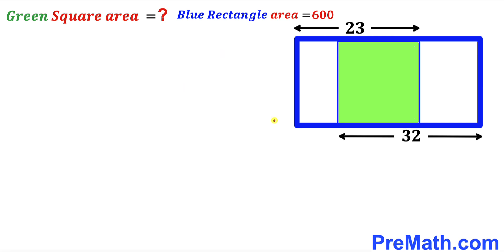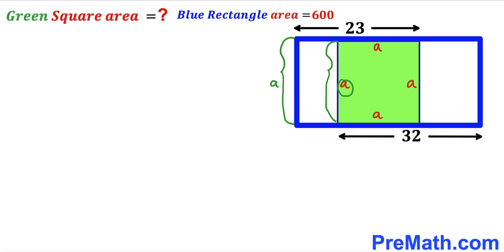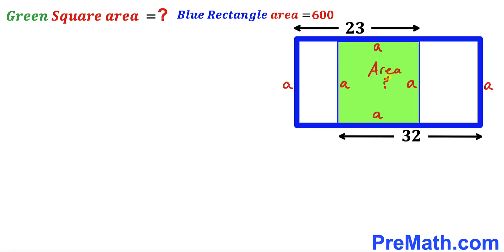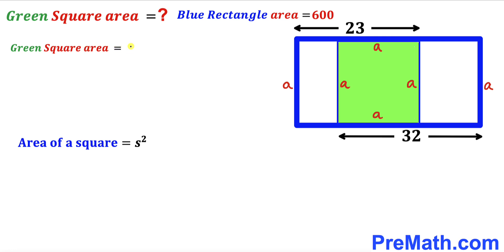Let's get started. Since we are dealing with this green shaded square and we know all its side lengths are equal, let me label this side length as lowercase a — so all four sides are labeled a. We also note that the vertical lengths on either side of the square equal a as well. Recalling the area of a square formula: area = s², where s is the side length, the area of this green square is going to be a².